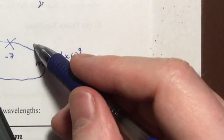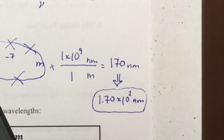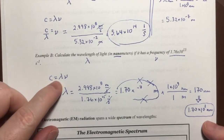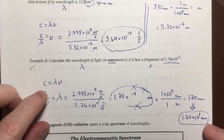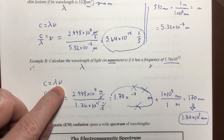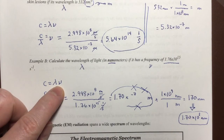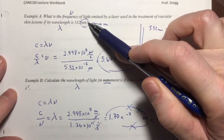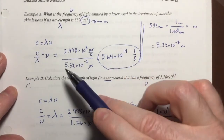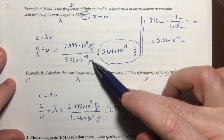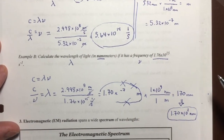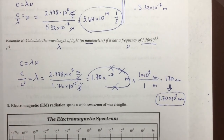That is the answer: 1.70 times 10 to the 2 nanometers. That's how to use the c equals lambda nu equation to calculate either the wavelength or the frequency of light or any electromagnetic radiation, including the length conversions needed before plugging in or after getting a result out of the equation.